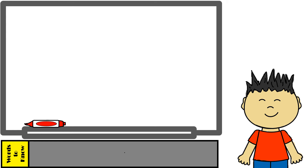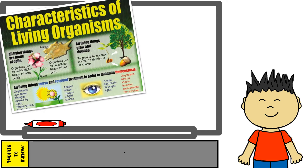Before we begin, let's quickly review our discussion on what is considered living. Remember that we have stated in previous lectures that all living things have certain characteristics in common, such as consisting of cells, having the ability to grow, to metabolize, to reproduce, and so on.